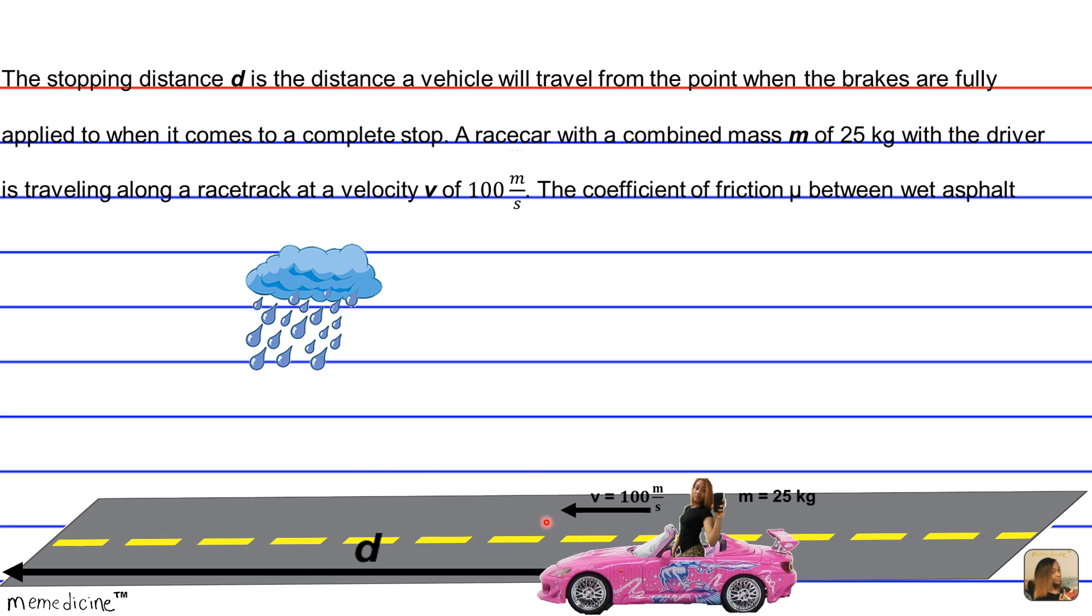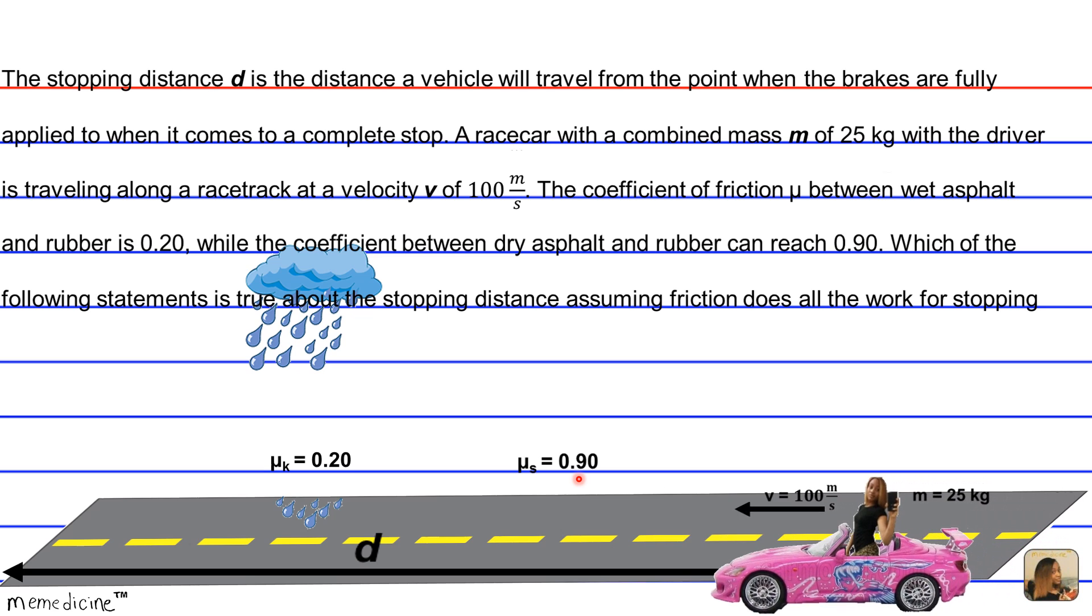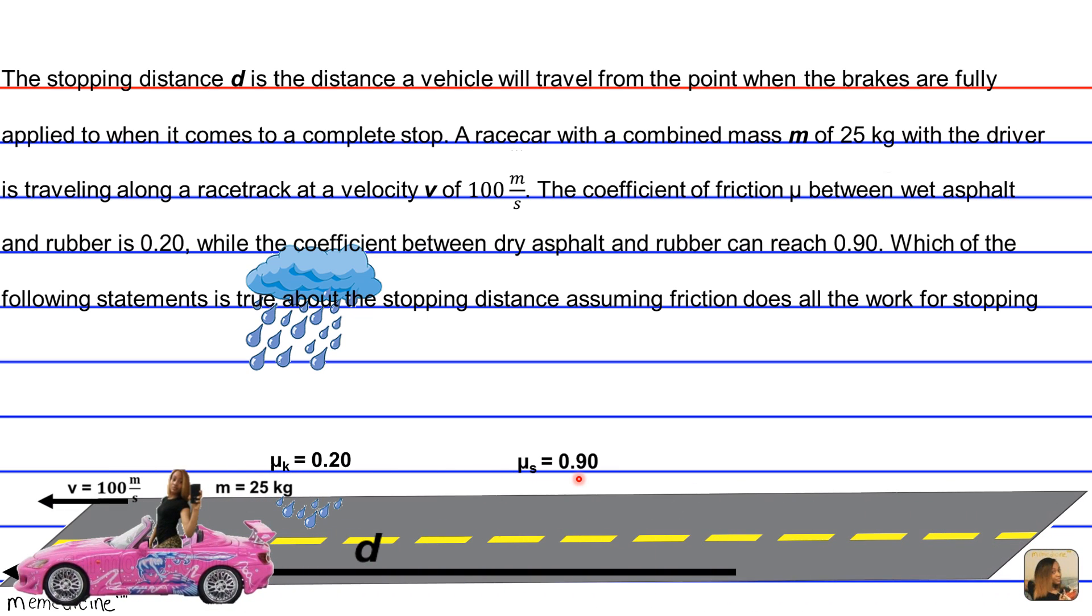The coefficient of friction μ between wet asphalt and rubber is 0.20, while the coefficient between dry asphalt and rubber is 0.90. Which of the following statements is true about the stopping distance, assuming friction does all the work for stopping?